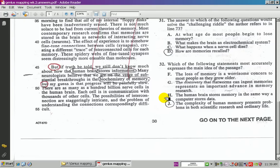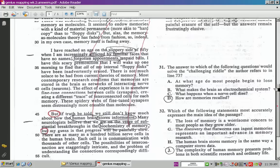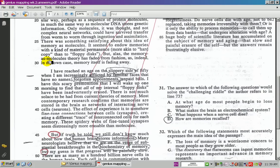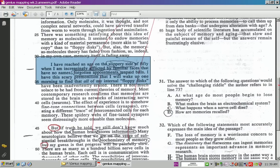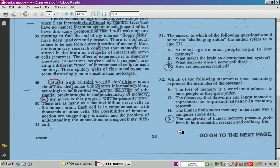Let's go ahead and take a look at H. The human brain stores memory in the same way as a computer. Well, that doesn't say anything about the central theme. If you look at J, J says, the complexity of the human memory presents problems in both science, research, and in ordinary life. In science, it talks about the scientists earlier, but also we talked about ordinary life. Remember the slippery slope paragraph over here? Both are entailed in the last answer choice, which is J for practice problem number 32.